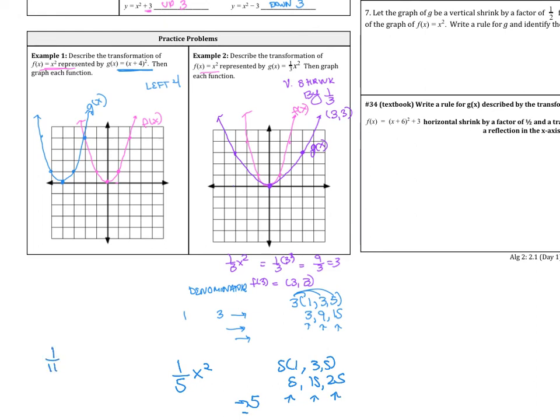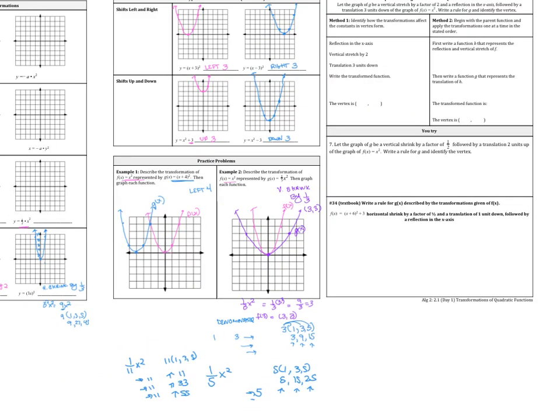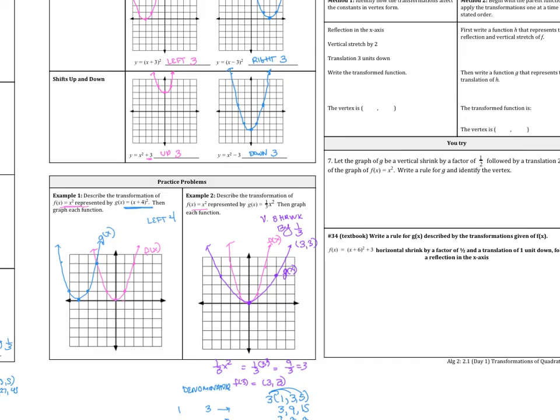What about 1 over 11 x squared? What would happen? So that would be, right 11, so 11 times 1, 3, 5, up, right 11, up 11, right 11, up 33, right 11, up 55. So just to kind of help you with a little bit more of some help with graphing with fractions.